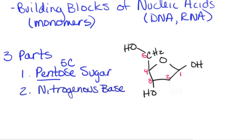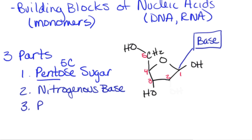There are four different bases you can find in DNA and four different ones you can find in RNA. The nitrogenous base is always going to be connected to the number one carbon. The third thing we're going to have is a phosphate functional group, and the phosphate functional group is always going to be attached at the number five position — that's really why it was important to number the carbons.